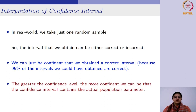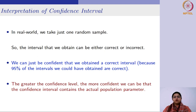We also know that the greater the confidence level, the more confident we can be that the confidence interval contains the actual population parameter. Intuitively, if I say I am 90% sure versus 99% sure, you would believe the statement with higher confidence. We will explore what confidence level to choose and why 95% is the most common interval as we move ahead.